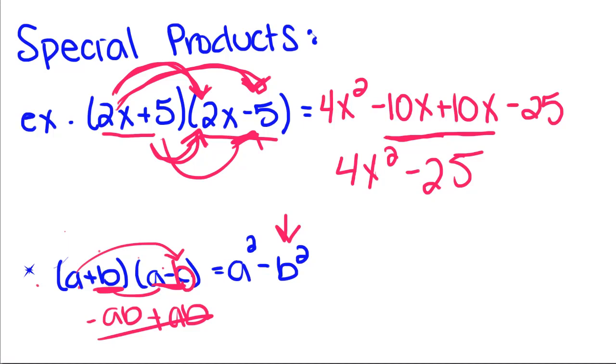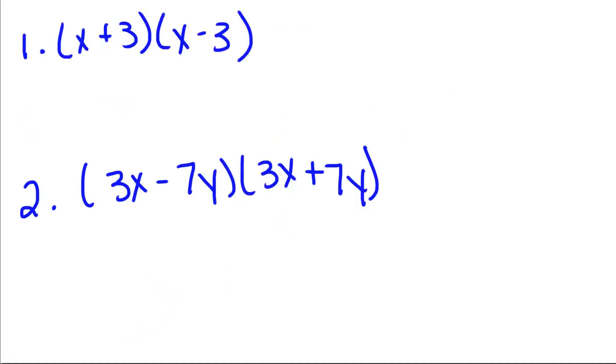So, now that we know that, let's do some examples. Since I have x plus 3 times x minus 3, I know that the middle terms are going to cancel out. So I can just square the first term and square the second term. 3 times 3 is 9.